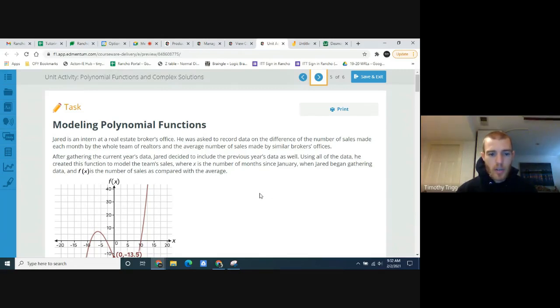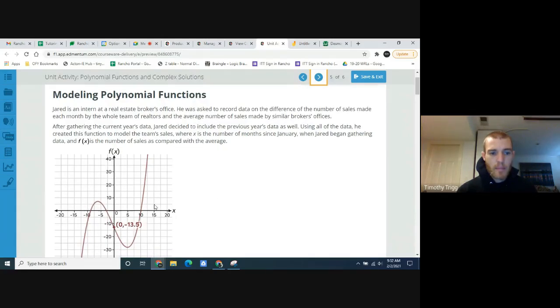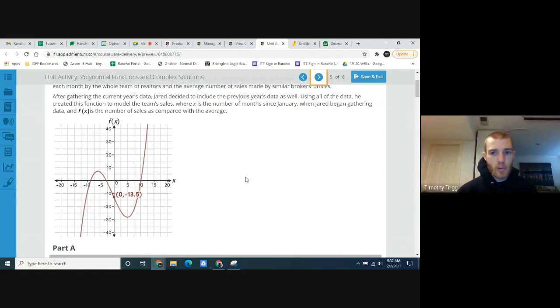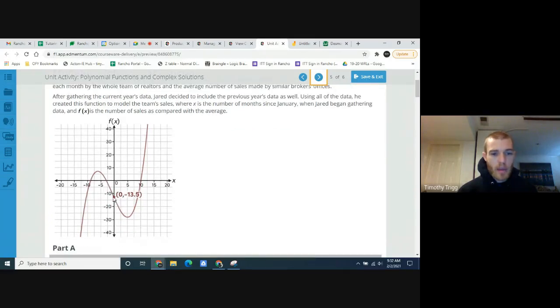So the number of months since January. So like where zero is, that's at January. So what this graph is kind of saying is that at January, their sales team, Jared's sales team that he works for was doing worse than average of similar brokers offices by 13.5 sales.